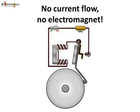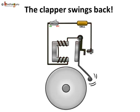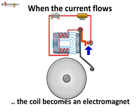As we know, it's the flow of the current that gives the coil its magnetic power. So, it no longer attracts the clapper. The clapper springs away from the bell back to its original position and touches the contact screw again.